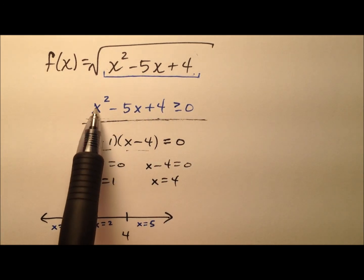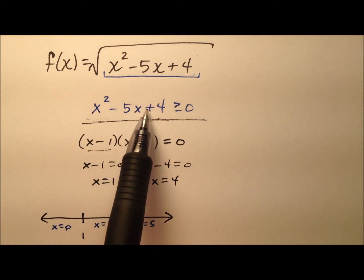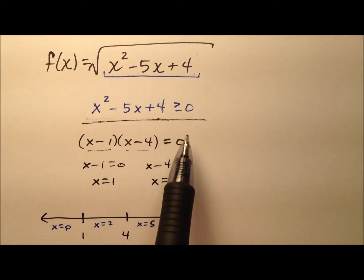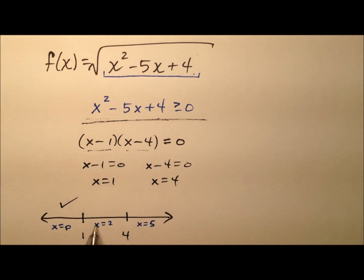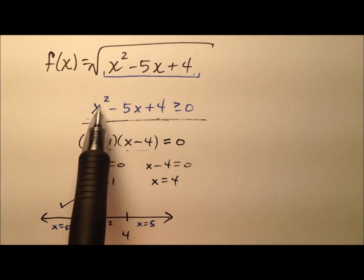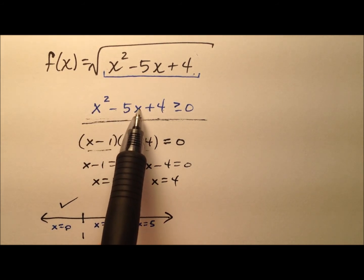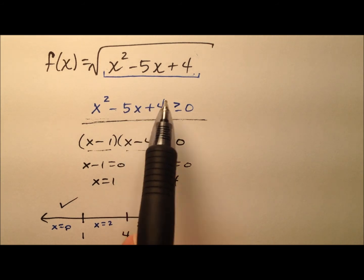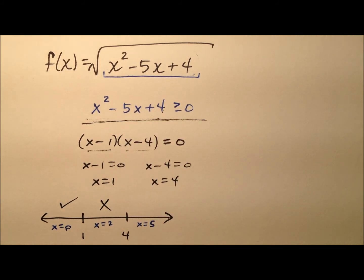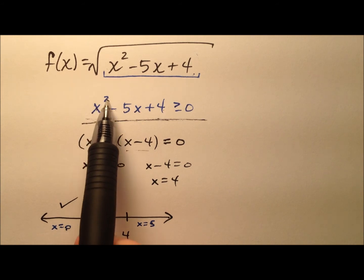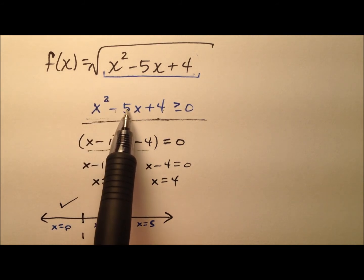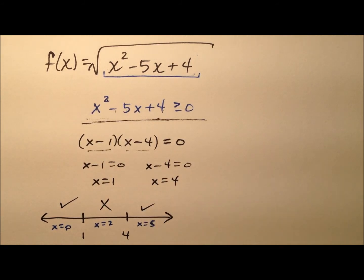Let's try 0 first. 0 - 0 is 0, plus 4—well, 4 is greater than or equal to 0, so that's good. And x = 2: 2² is 4 minus 10 is -6, plus 4—that's going to be negative, so that won't work. Plug a 5 in: 5² is 25 minus 25, plus 4, so that's good as well.